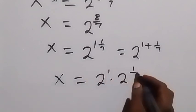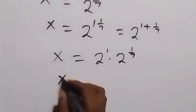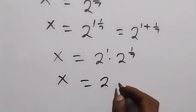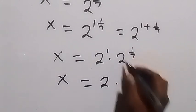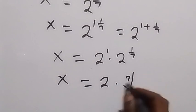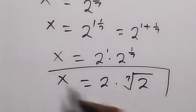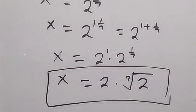Since 2 raised to power 1 is 2, we have x equals 2 multiplied by 2 raised to power 1 over 7. We can write 2 raised to power 1 over 7 as the 7th root of 2. So the solution to the problem is x equals 2 multiplied by the 7th root of 2. Thank you for watching — please share this video and subscribe to my channel. See you in the next class!